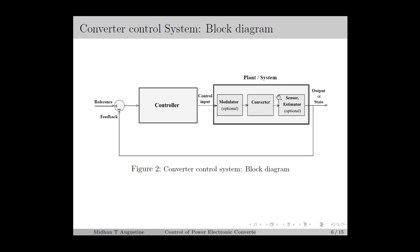The physical variables of the system that are measured using the sensor are called the output. The minimal set of variables that capture the entire dynamics of the system is called the states. The outputs are usually a subset of the states or can be a function of the states. In a feedback control system, we use either the output or the state as feedback, and the reference specifies the desired value of the output or state. The controller uses the reference and feedback information for computing the control input for the system.